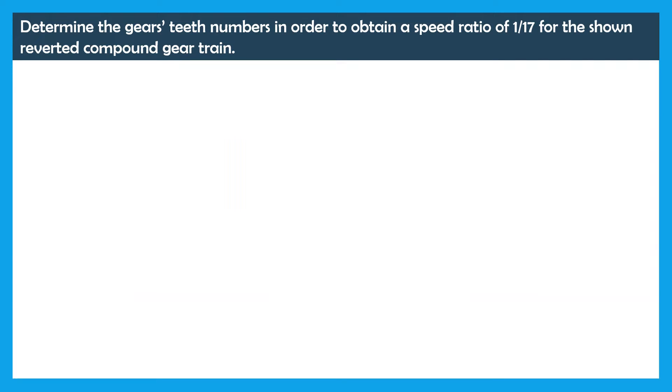In this problem, we are asked to determine the numbers of teeth of the gears in order to obtain a speed ratio of 1 over 17 for the reverted compound gear train shown here.